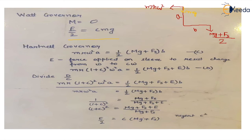Now looking at the Hartnell governor — a simple diagram is shown where the obliquity of the system is ignored and the upper arm is considered in a perfectly vertical position. Taking moments about point A: mr·ω²·a = (1/2)·Mg·b + Fs·b, where mr·ω² is the centrifugal force acting outwards, Mg is the mass of the sleeve, and Fs is the spring force. The weight of the ball is not considered since there is no perpendicular distance due to no obliquity.